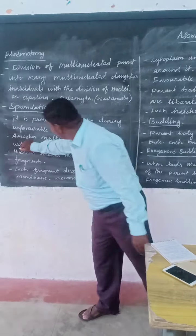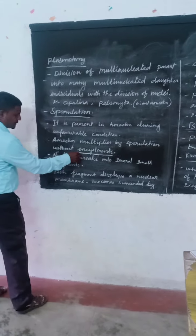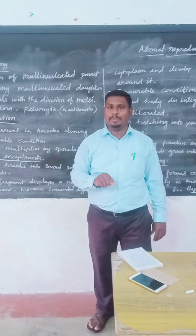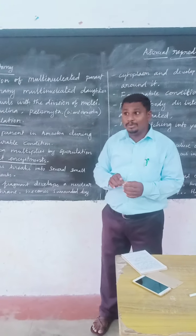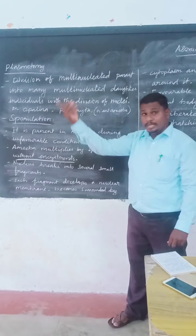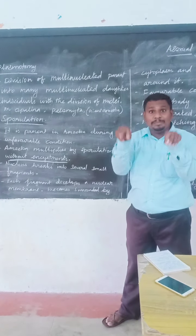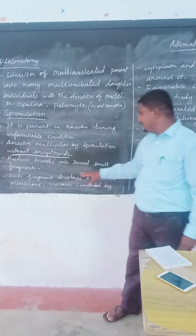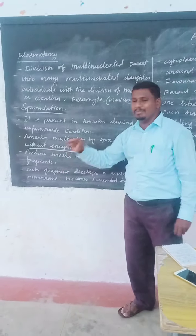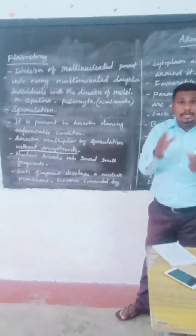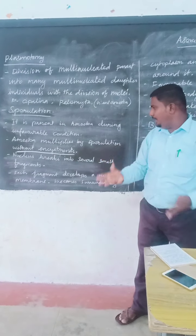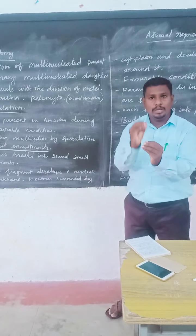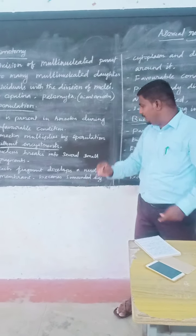It is a very important point: without encystment. We are already discussing about encystment and spore development. The two layers are on the front. The encystment is where it is. The nucleus is breaking into several small fragments of the nucleus.